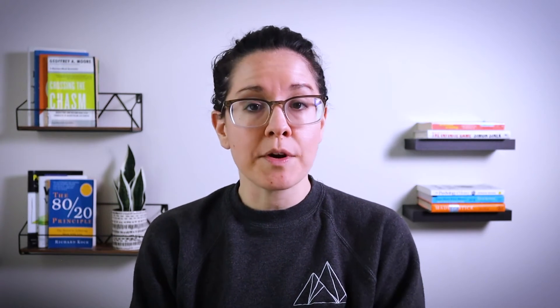You can optionally append what are called path segments to your URL, where the page name is technically seen as the first path segment. This is great for more custom navigation functions on your page, or even creating search filters such as in a marketplace search. Bubble has a few different ways of extracting your path segments so that you can carry out this functionality.